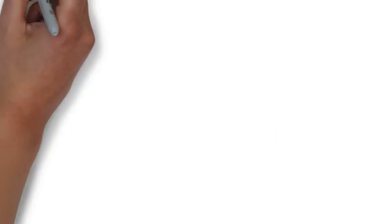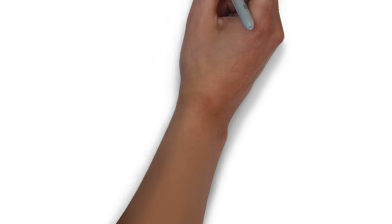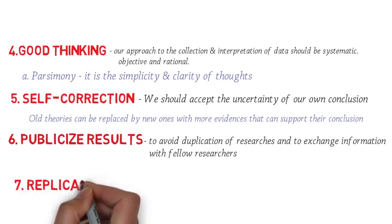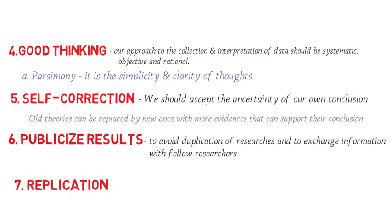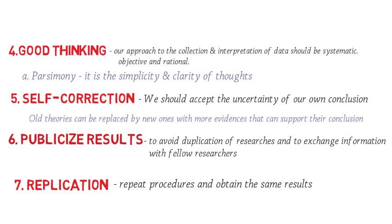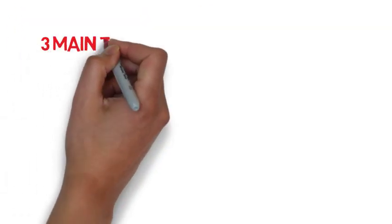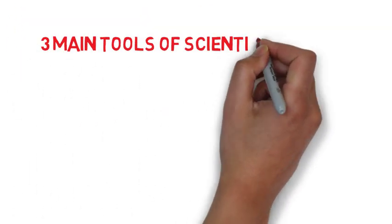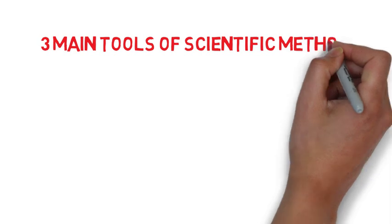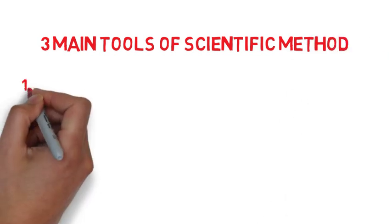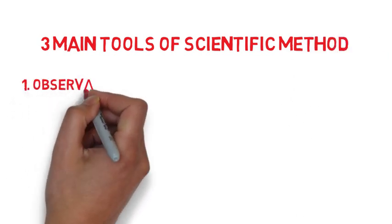Going back, we also need to publicize our results to avoid duplication of researchers and to exchange information with followers. And lastly, replication — we should be able to repeat our procedures and get the same results over again. Now that we are familiar with the important characteristics of scientific method, let's proceed to the three main tools of scientific method.